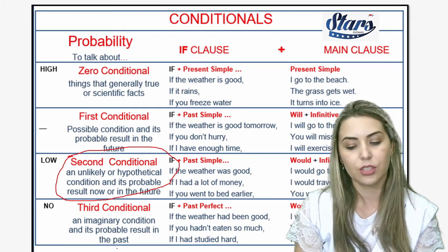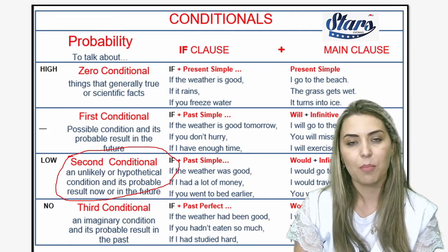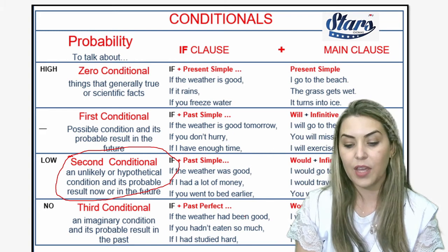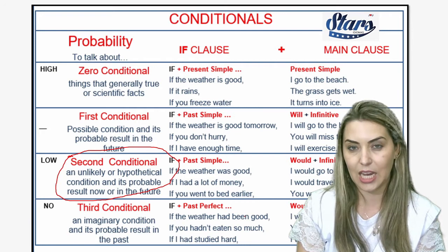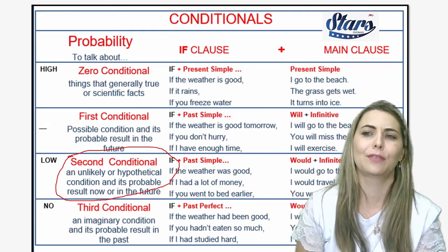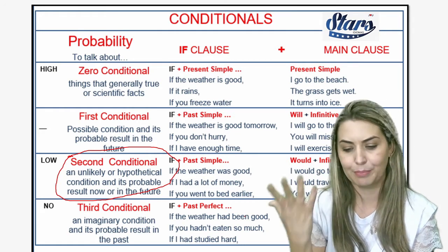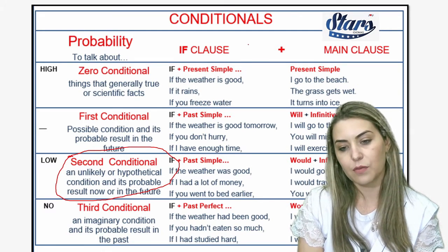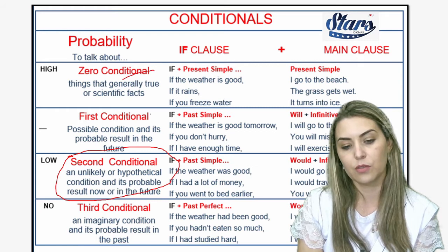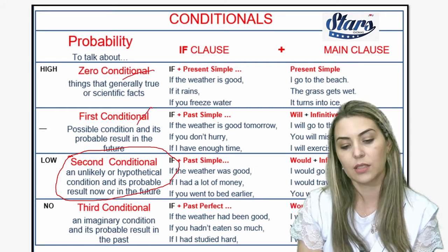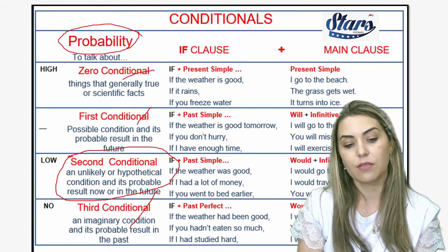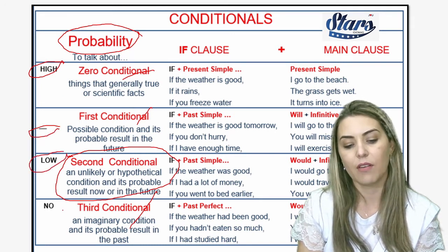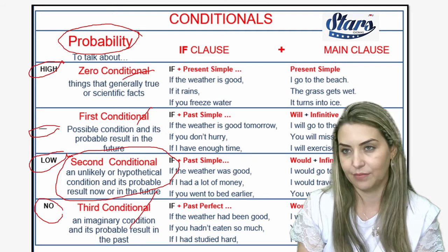And the third conditional is even more imaginary: if we hadn't eaten so much, you wouldn't have felt sick. It's even more impossible. So that's how conditionals work — zero conditional, first conditional, second, and third. They are related to probability: high, almost normal, low, never ever gonna happen.